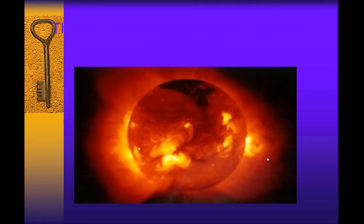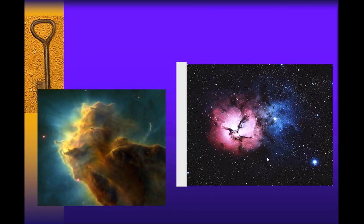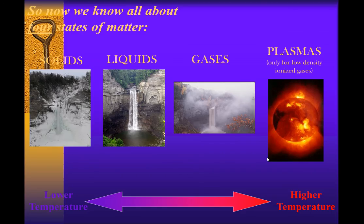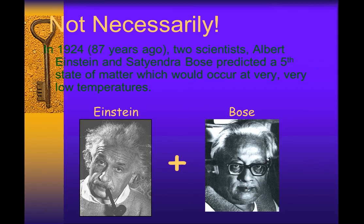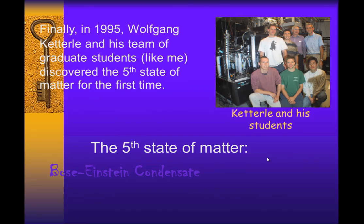So we know about those four states, but what would happen if we could lower the temperature to absolute zero? Would everything just be a solid? No. In 1994, two scientists, Albert Einstein and Dr. Bose, predicted a fifth state of matter which would only occur at very low temperatures. And in 1995, Dr. Wolfgang Ketterle and his team of graduate students were able to discover the fifth state of matter for the first time.